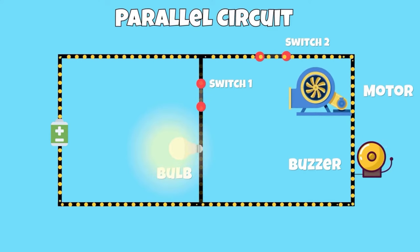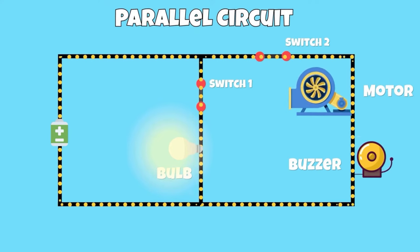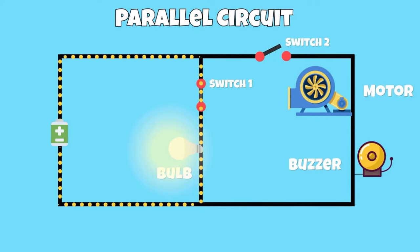Now, what would happen if we were to open switch two? If we open switch two, we still have a complete path for the light bulb to stay powered on. However, the motor and buzzer will turn off.